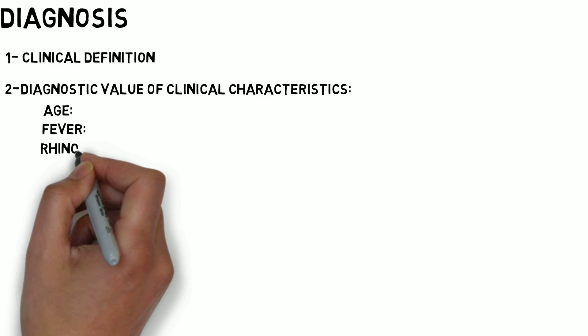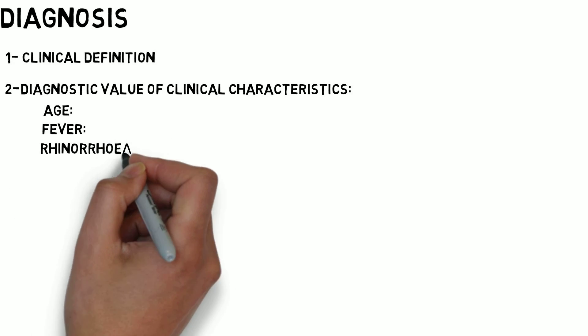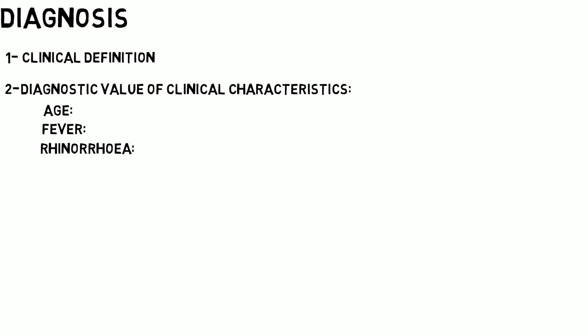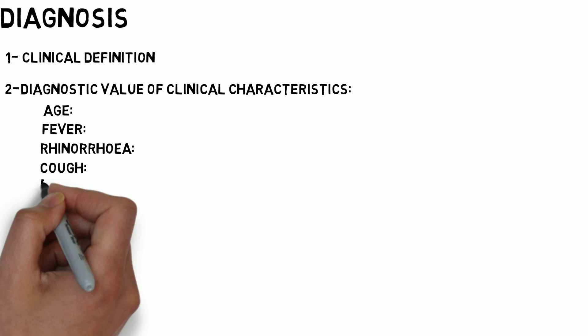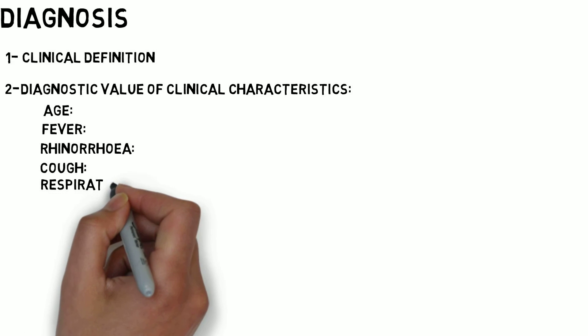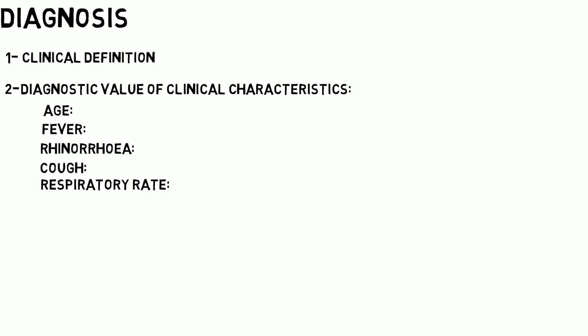Rhinorrhea — nasal discharge often precedes other symptoms such as cough, tachypnea, respiratory distress, and feeding difficulties. A dry wheezing cough is characteristic of bronchiolitis and is one of the earliest symptoms. Increased respiratory rate is an important symptom in lower respiratory tract infections, particularly bronchiolitis and pneumonia.